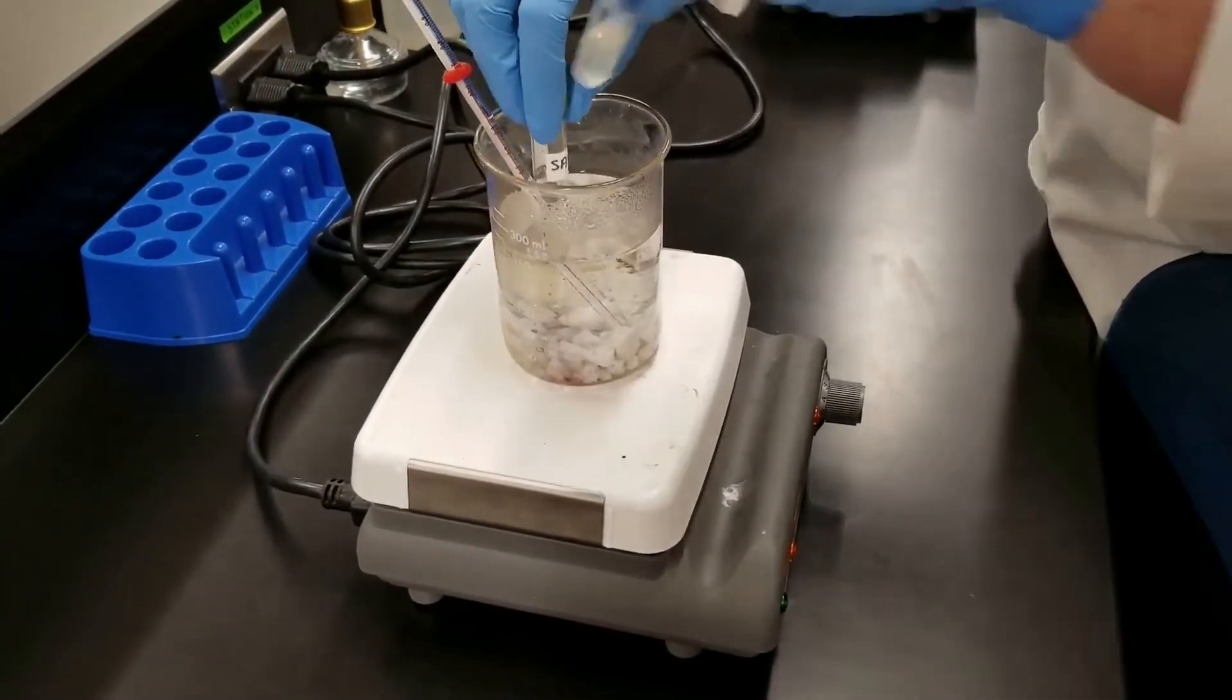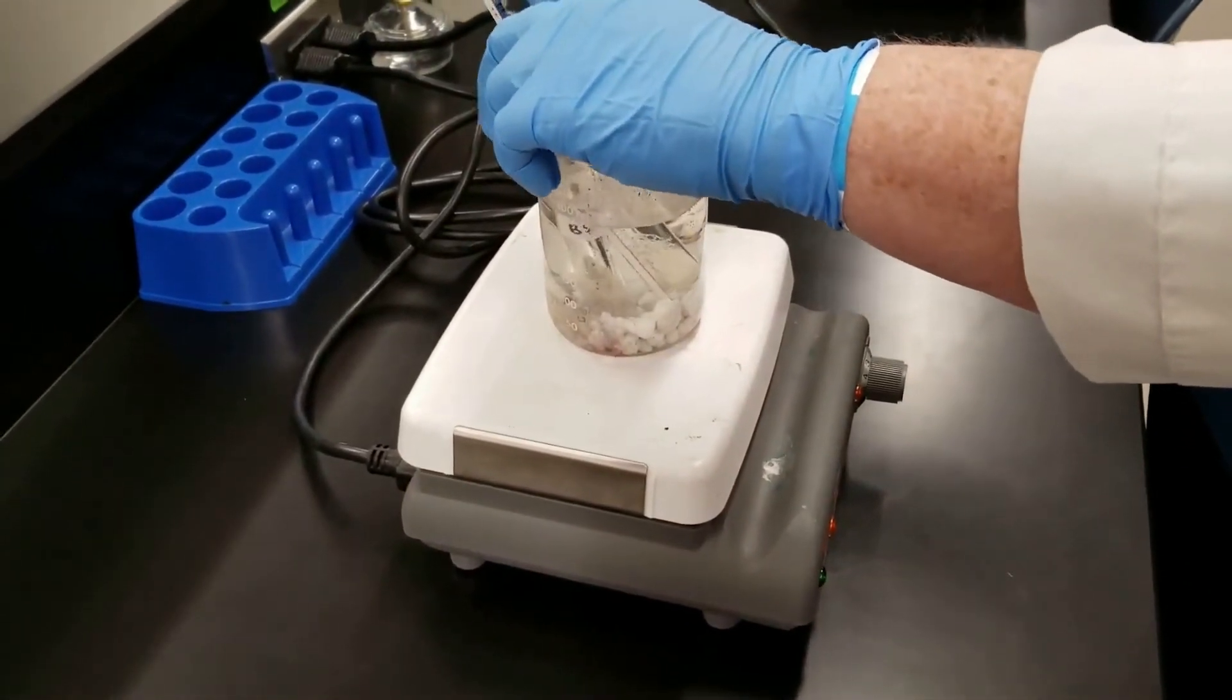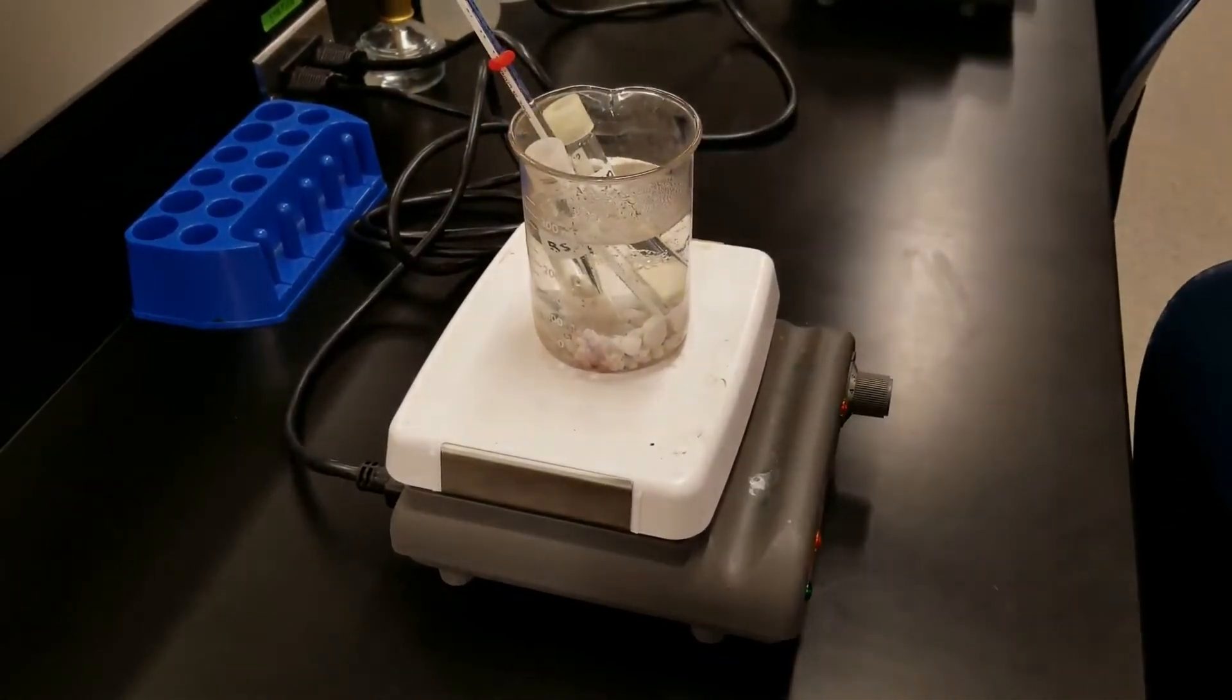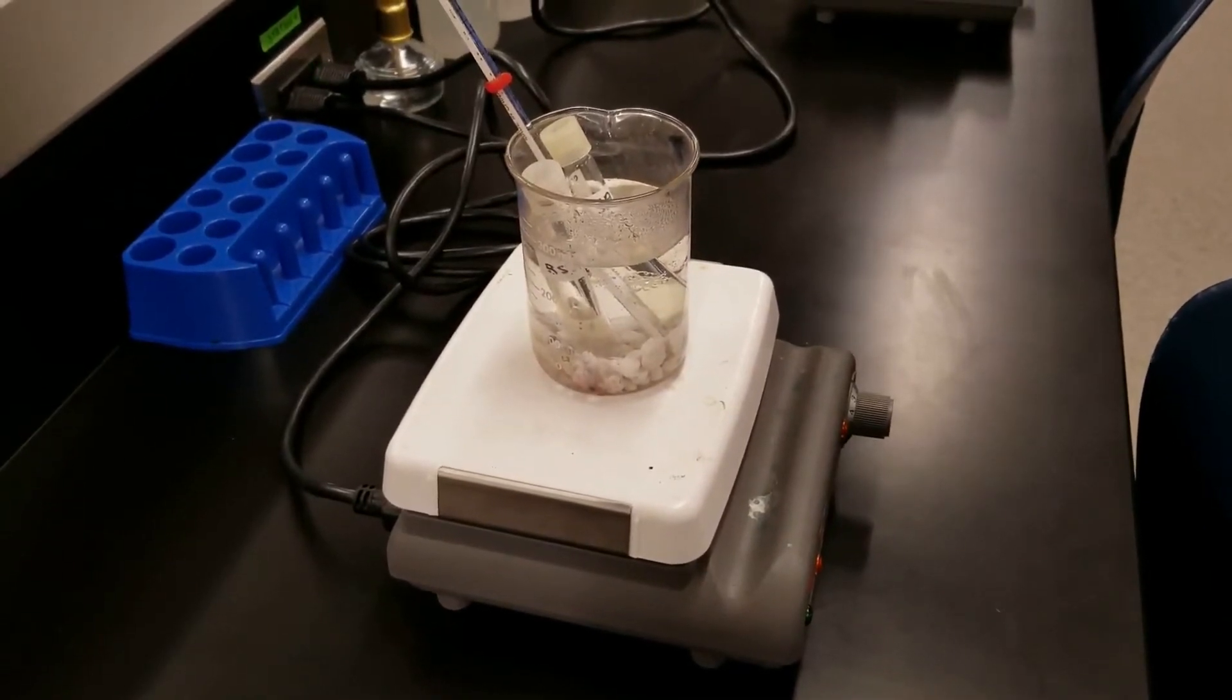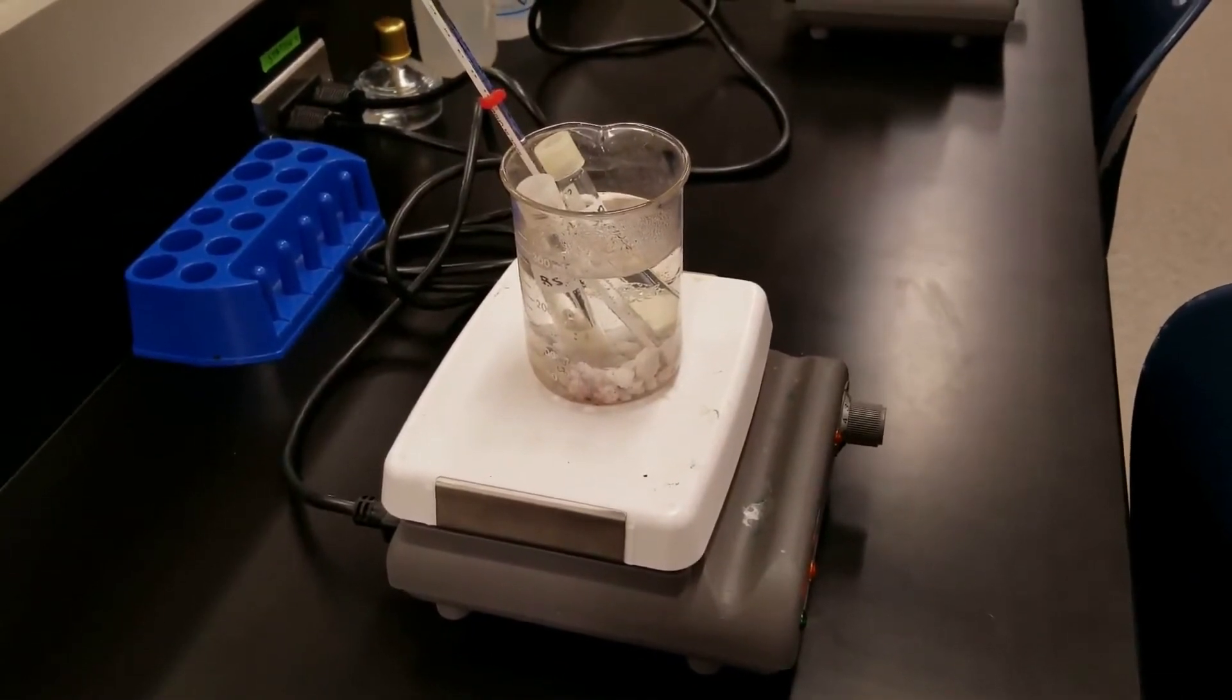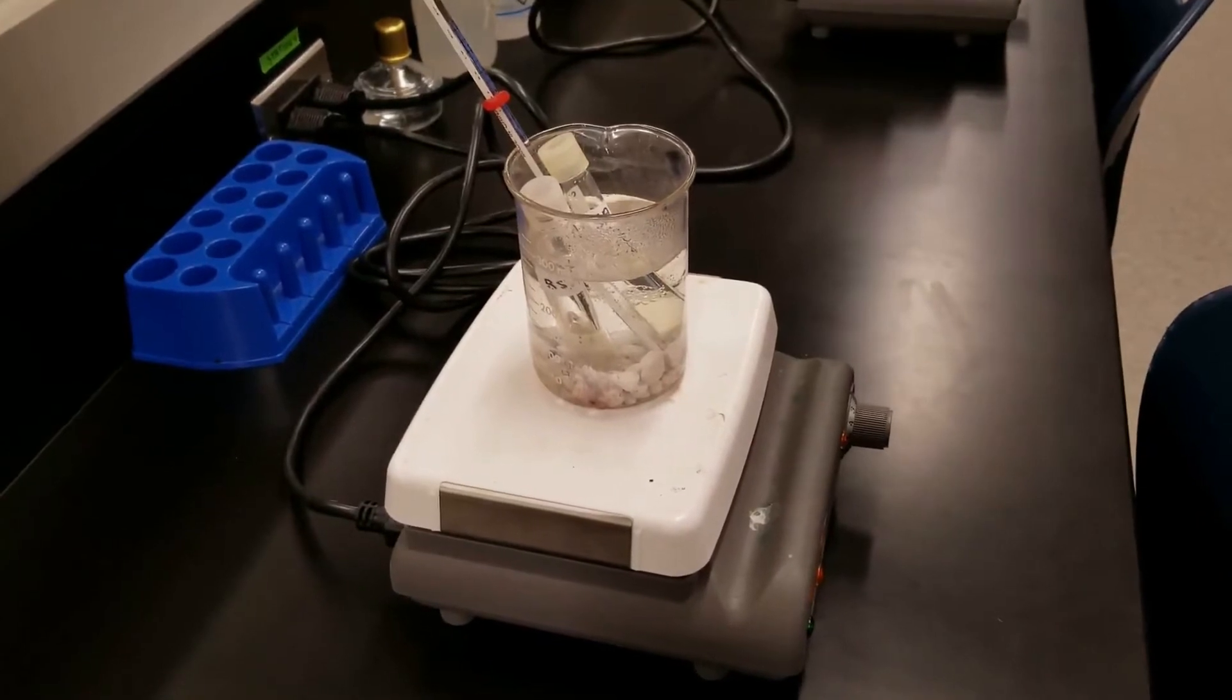We're going to put the tubes in here and time it for 10 minutes. So this is 40 degrees Celsius. As a point of reference, human body is 37 degrees Celsius. We'll leave it in there for 10 minutes, and then we remove it. We will streak it out on a plate, and then we will move to the next temperature, which will be 80 degrees Celsius, and then the final temperature will be 100 degrees Celsius.